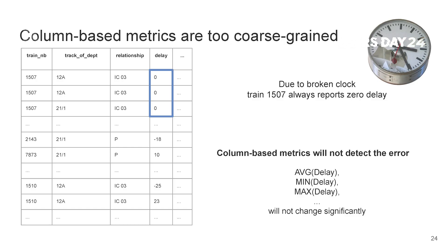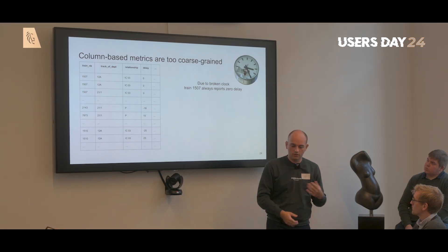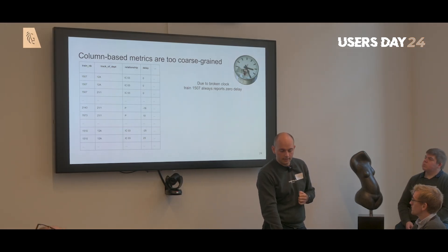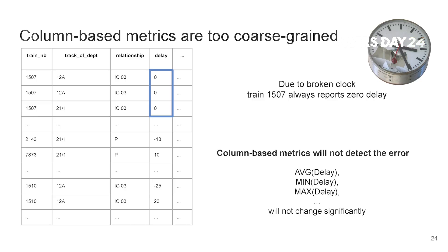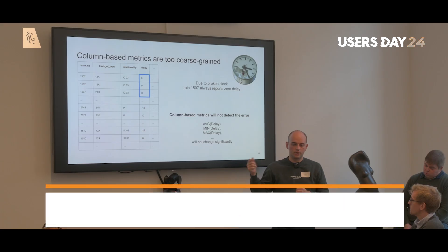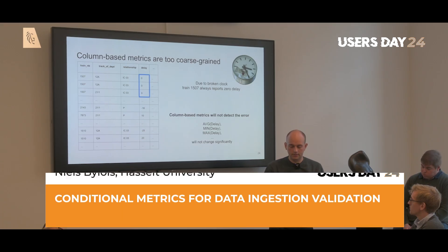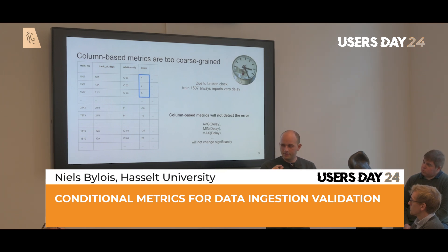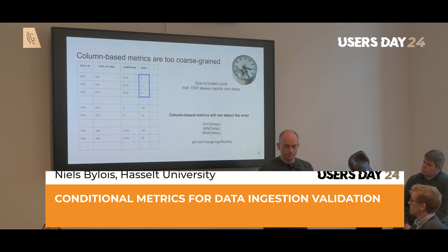The problem is that these metrics are too coarse-grained. If we have a scenario where there is a single train with a broken clock always reporting exactly zero delay, those few rows will not deviate significantly enough for any metric to detect the error. The column-based metrics will not deviate at all — maybe 0.001 percent — a very small deviation that's hard to pick up.